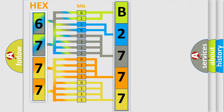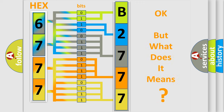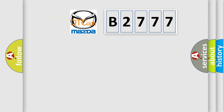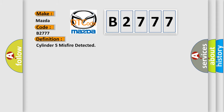We now know in what way the diagnostic tool translates the received information into a more comprehensible format. The number itself does not make sense to us if we cannot assign information about what it actually expresses. So, what does the diagnostic trouble code B2777 interpret specifically for Mazda car manufacturers?